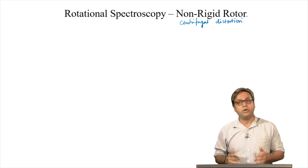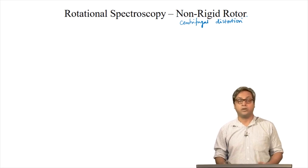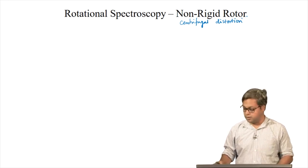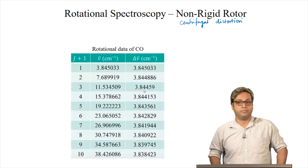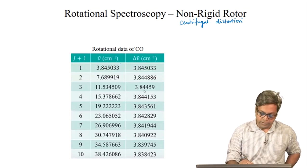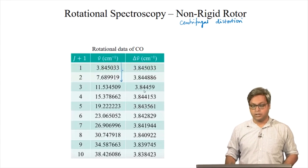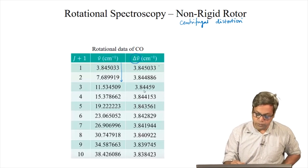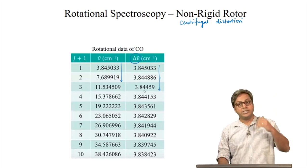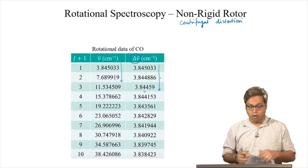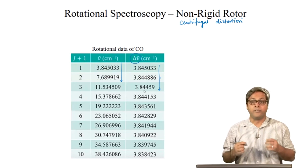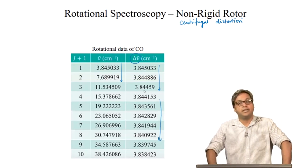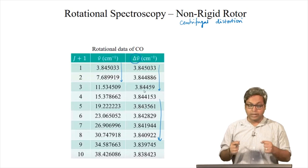But does this centrifugal distortion affect the rotational spectrum? To answer this, let us look into the real experimental data from the carbon monoxide rotational spectrum. Here, the frequencies of each line are given, and in the last column we have the frequency gap between adjacent lines. We see that the gaps are steadily decreasing — more rapidly so as we go to higher and higher J — because the bond length is changing.